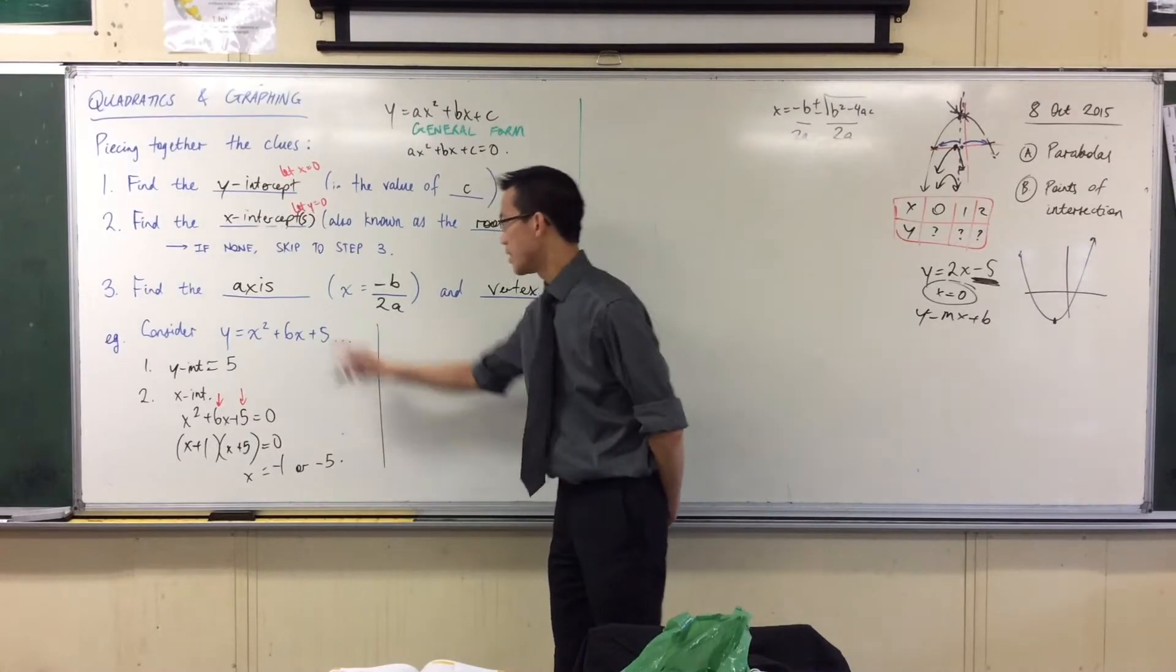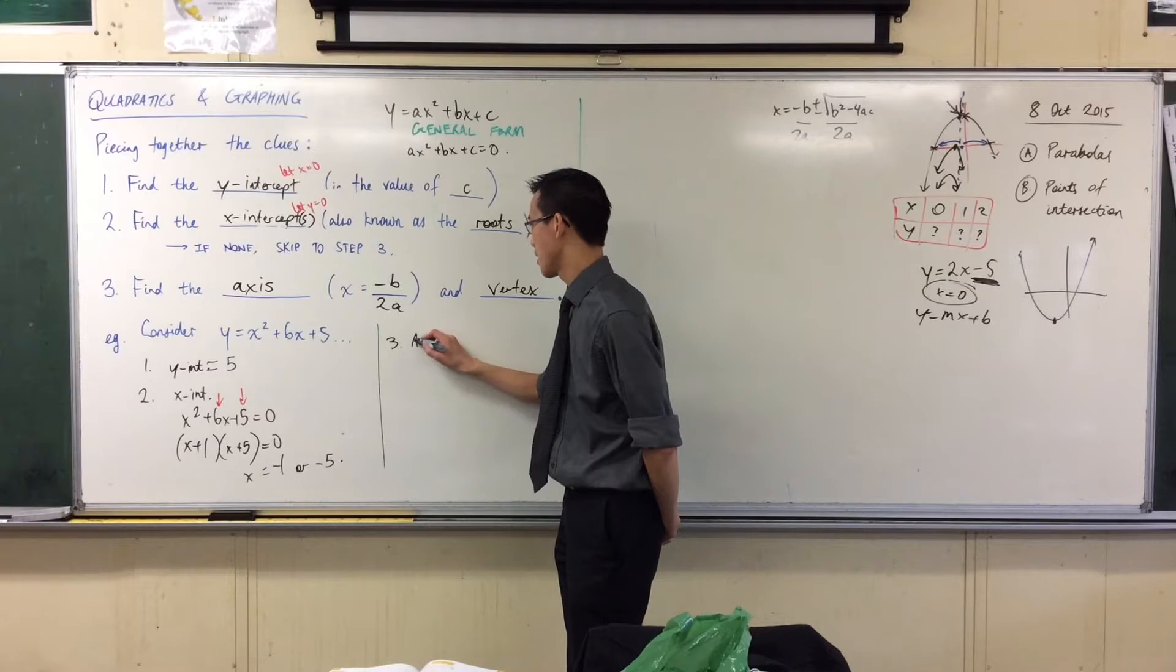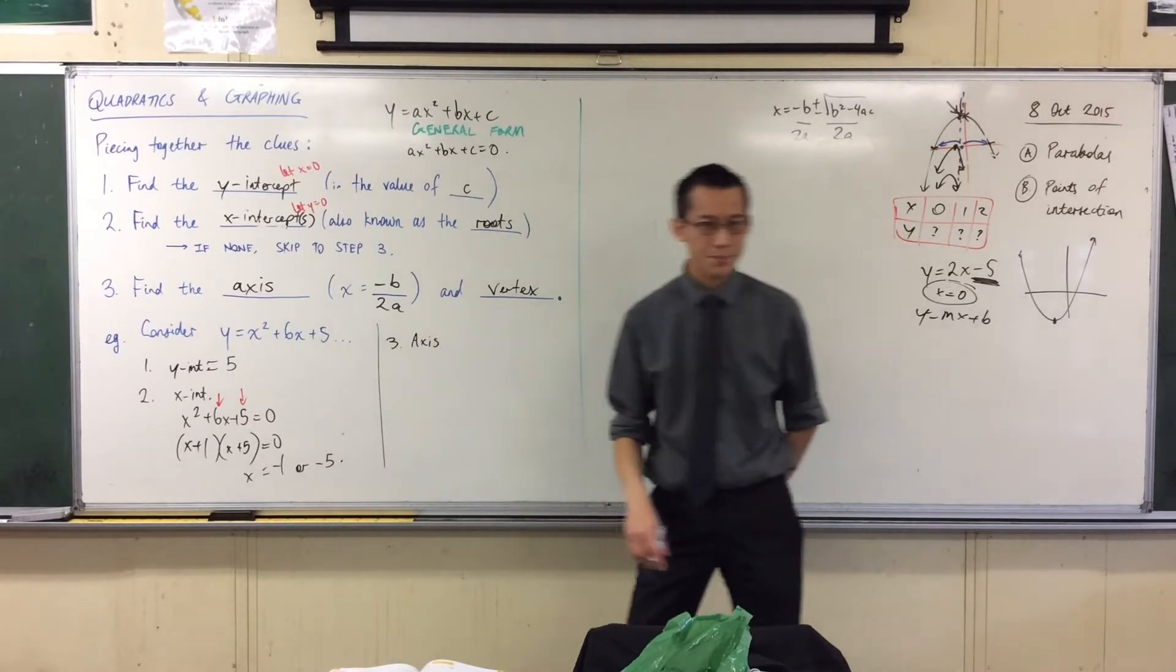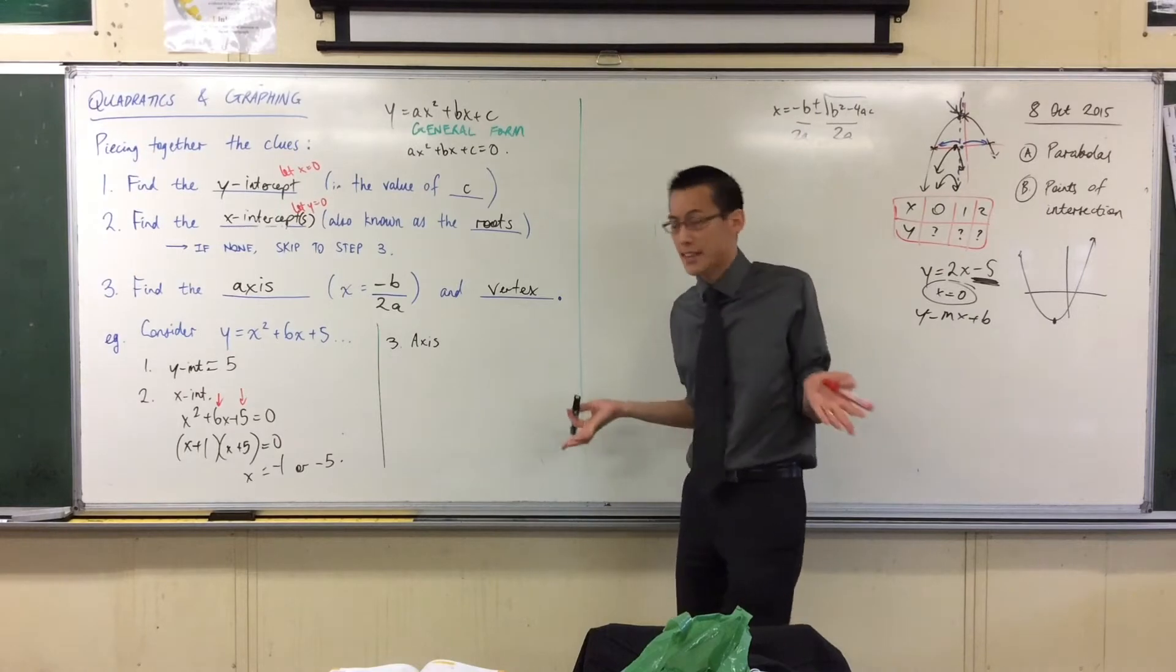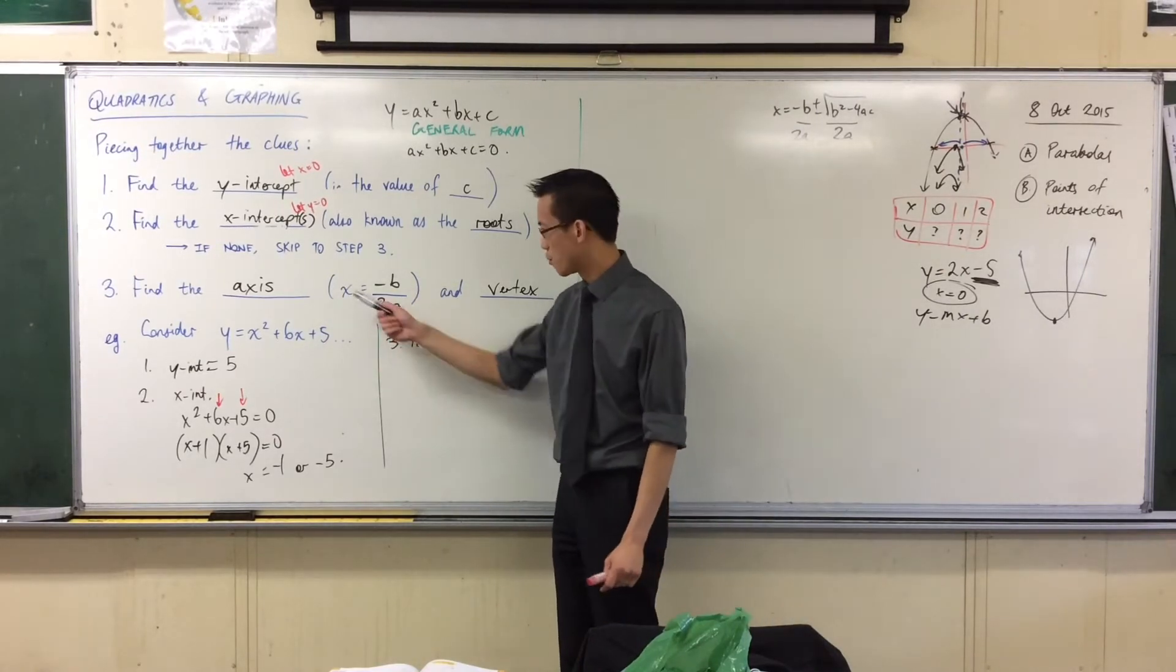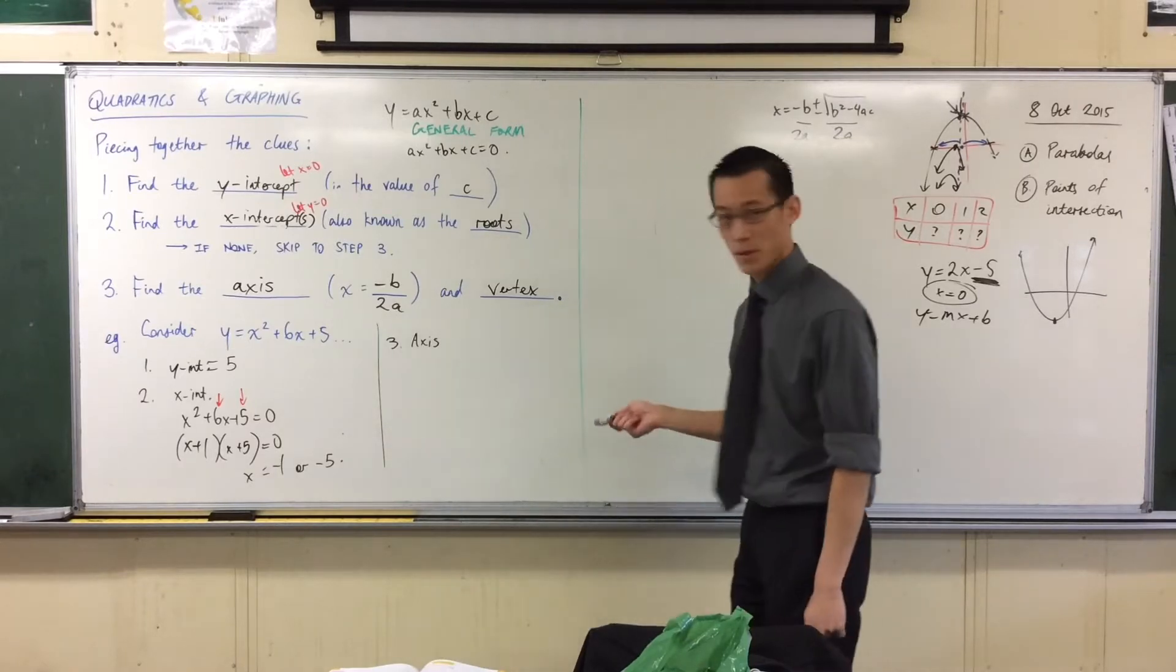Now, this last little step here, the axis and then the vertex. So I'm going to write step three, axis. Remember I said, if you can't find any x-intercepts, that's okay. You can do this. You can put x equals minus b over 2a. Let's just quickly try that and see what happens.